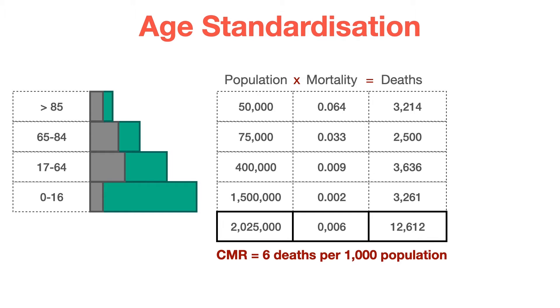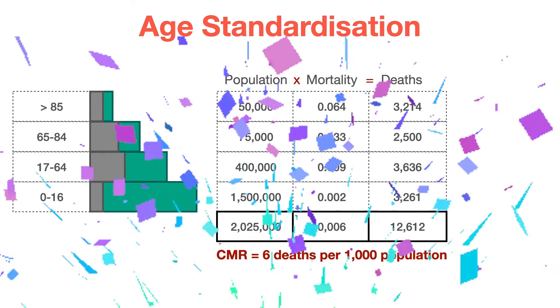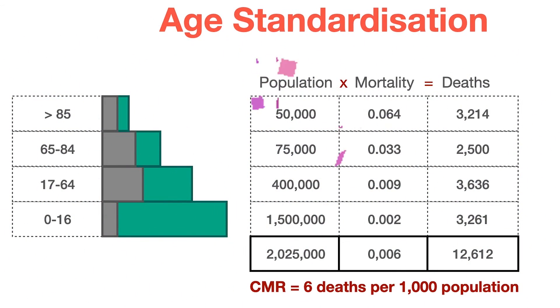So what can we do to fix this? There are two strategies: what we call direct and what we call indirect age standardization. This is not complicated — stick with me, I promise you you're going to understand this.